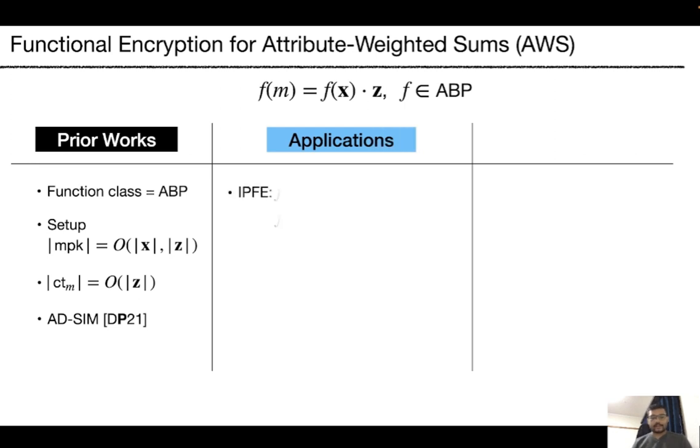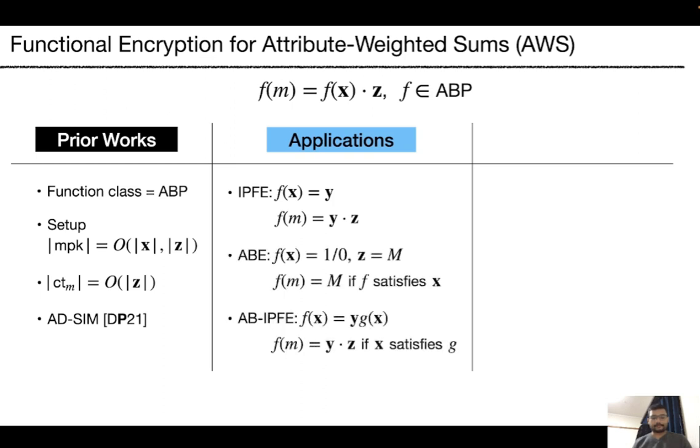The functionality also has several applications. For example, it captures existing FE schemes such as IPFE, ABE, and ABIPFE. However, the current structure of AWS has many limitations.